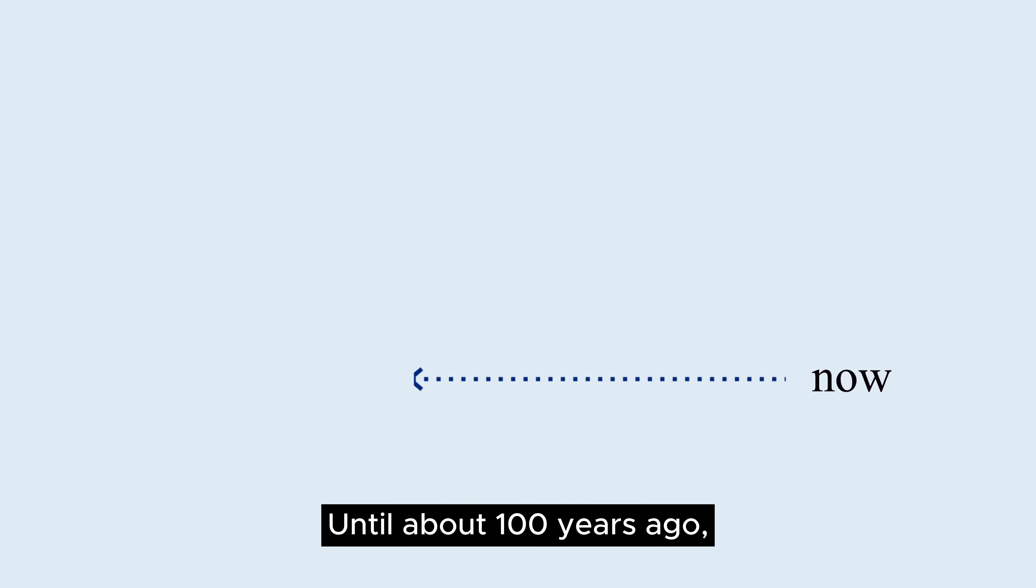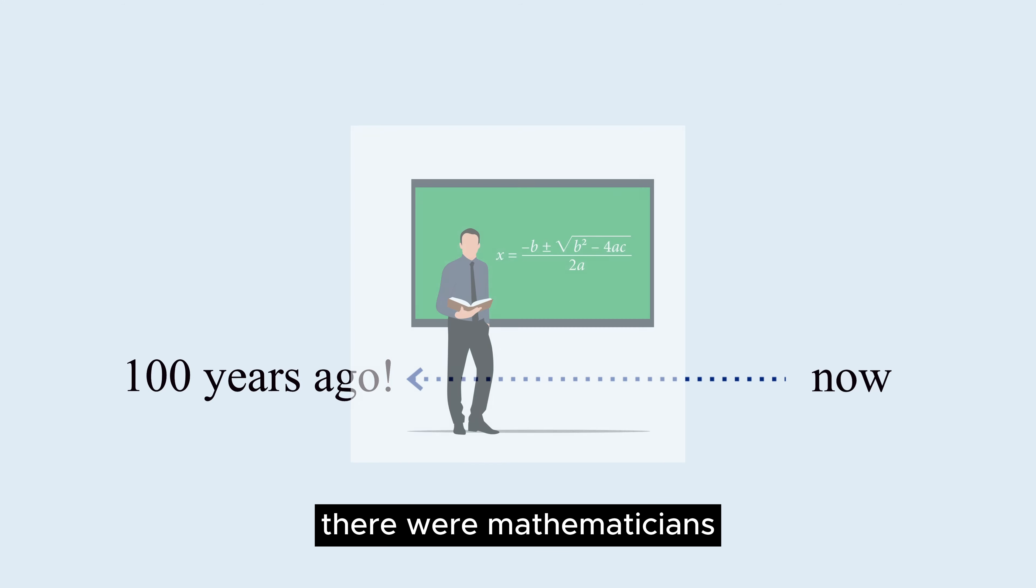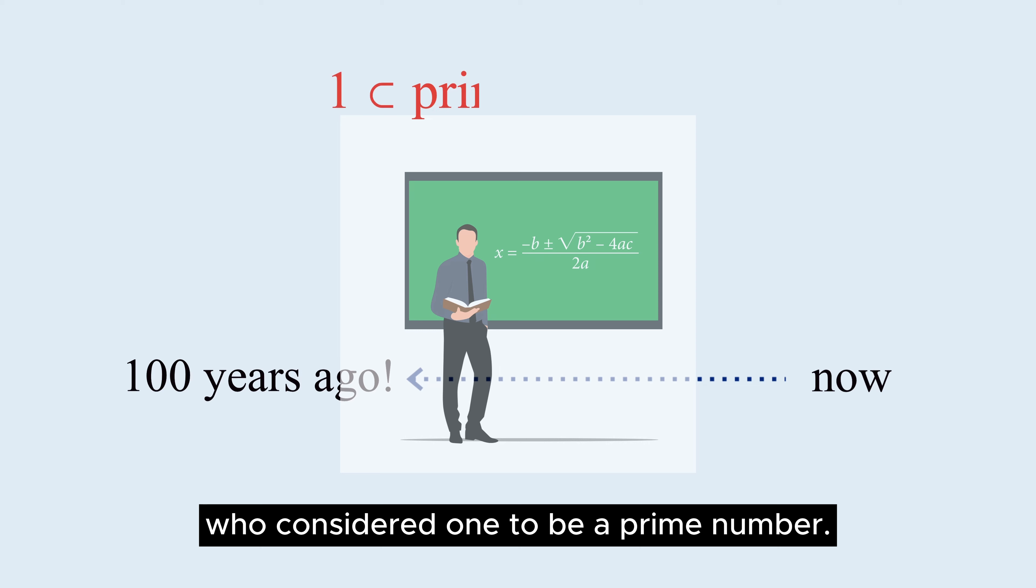Hi! Until about 100 years ago, there were mathematicians who considered 1 to be a prime number. Please watch the previous video linked above.